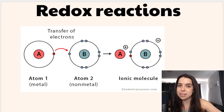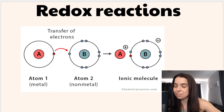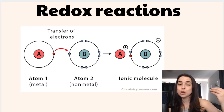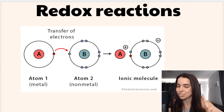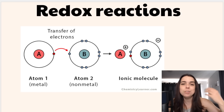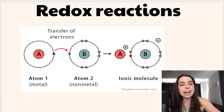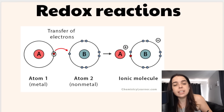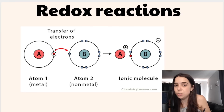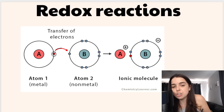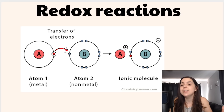I want to start off by reminding you about ionic bonding. When we have ionic bonding occurring, it involves a transfer of electrons. We have a metal and a non-metal — you learned about this in grade 10 — and essentially what happens is that atom number one, the metal, has an electron and gives it away, it loses an electron. That electron is transferred to atom number two, which gains that electron.